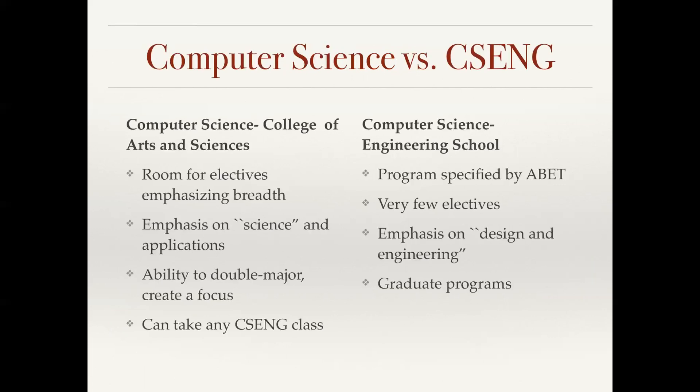So what's the difference between computer science and computer science and engineering? I think the two names really describe the difference. The computer science and engineering degree is a computer science degree within the engineering school. In our department, the computer science degree in the College of Arts and Science has room for electives, which emphasizes breadth within the major. It's an emphasis on the science and applications. You have the ability to double major or create a focus. We have lots of students who double major in computer science and mathematics, or computer science and economics, or computer science and business. These are all possibilities within our major because we have much more flexibility. And if you don't declare as a CS major until later in your career at Santa Clara University, you can still finish within four years in our department because we don't have so many extra requirements specified by the engineering program.